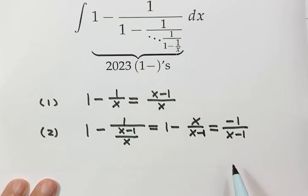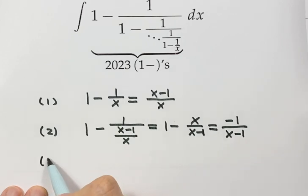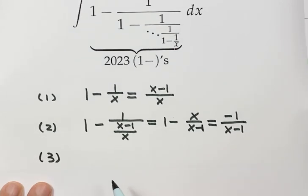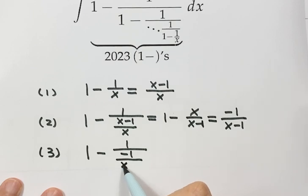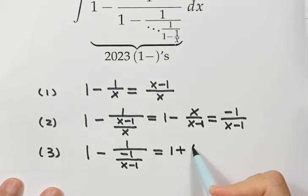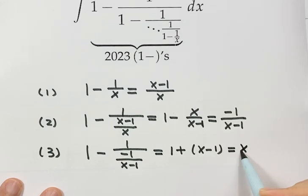So now let's see the next step, step three. So step three, we have 1 minus 1 over, put this one down here, negative 1 over x minus 1. Then here, negative negative positive. Then we have 1 plus x minus 1, which just equals x.